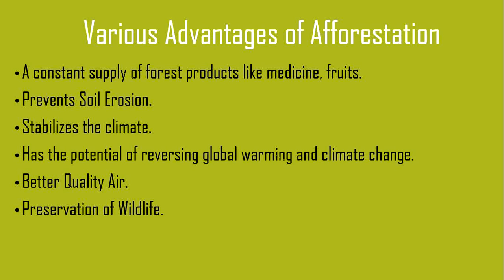Afforestation helps stabilize the climate. As you know, global warming is increasing day by day — kabhi bhi baarish aa jati hai, kabhi bhi bahut zyada dhoop par jati hai, so balance is not there. Afforestation ki wajah se it will balance or stabilize the climate. It also has the potential of reversing global warming — earth ka temperature bahut tezhi se badh raha hai, so usko stop karne ka ek hi tariqa hai — that is afforestation.